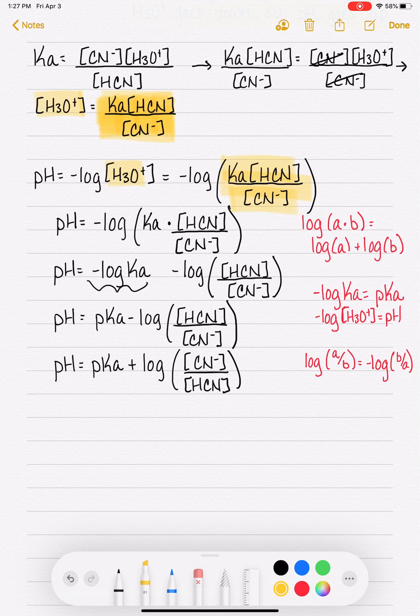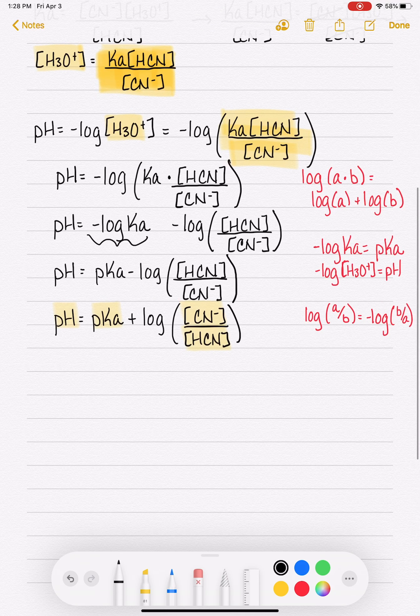So this is what we've ended up with. If we wanted to calculate the pH of this solution, we would just need to look up the pKa, which is in a data table somewhere. We would need to know the concentration of cyanide ion that we added, and we'd also need to know the concentration of HCN that we started with. And then there we go. We'd be able to very quickly calculate the pH of the solution.